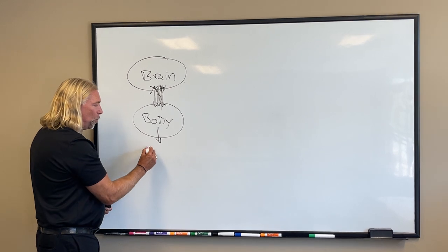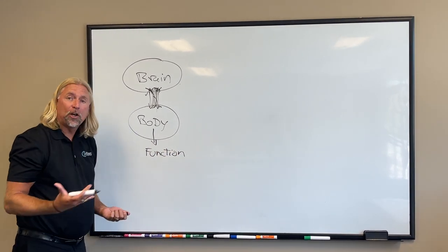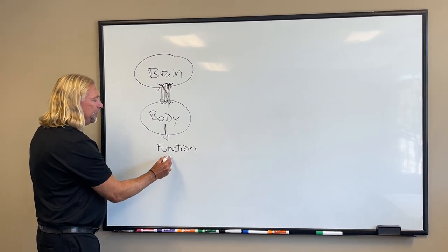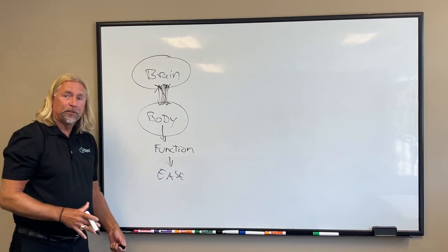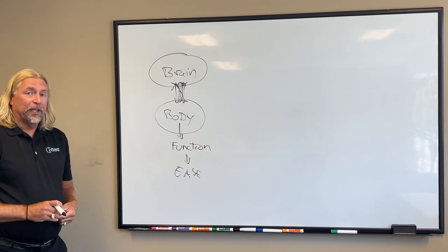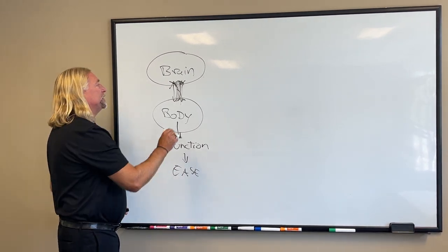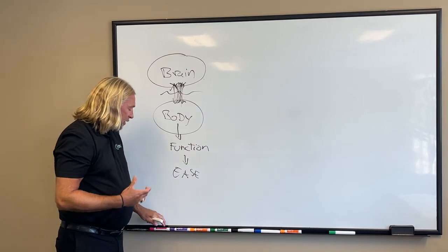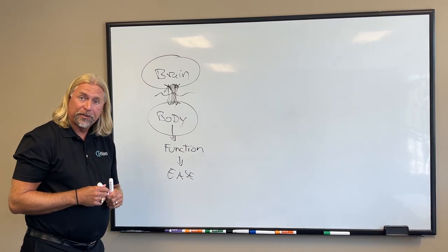All these messages back and forth. And when that works well, how do you think your body will function? Patient says good. You say right, it would be functioning good or a state of what we call ease, where everything's just working well. What happens is in life we do things where we'll slip, fall, shovel, sleep wrong. These things will happen and it will create irritation of the mechanoreceptors or interference in the nervous system.